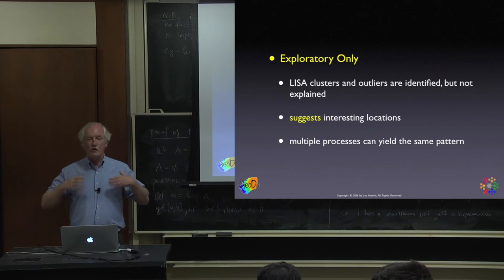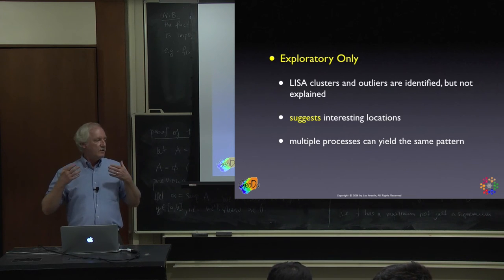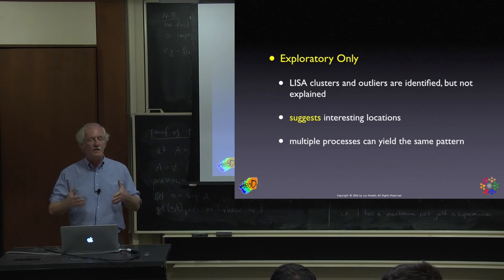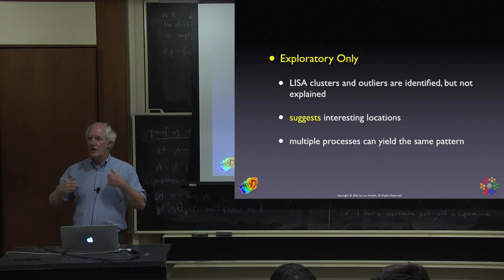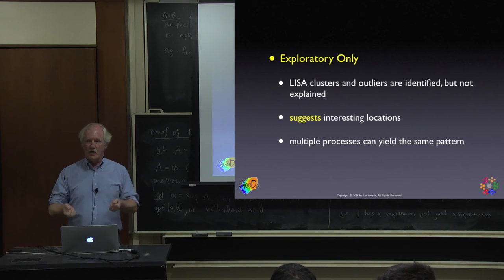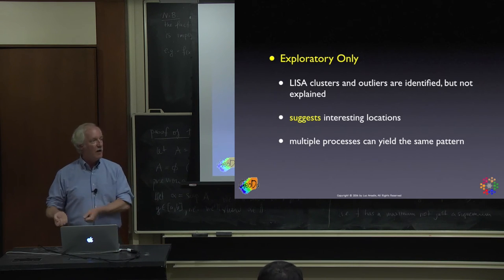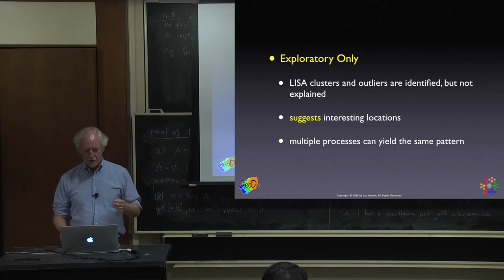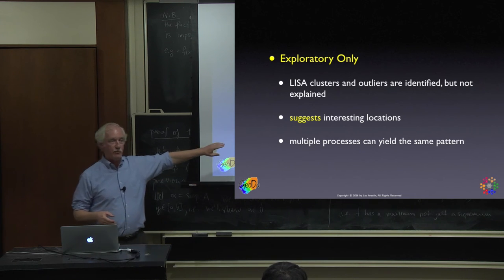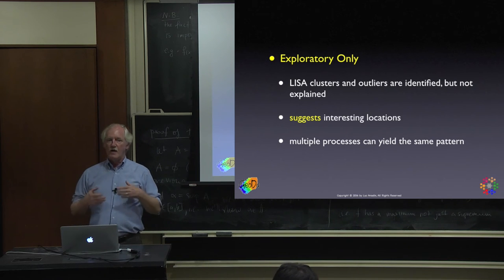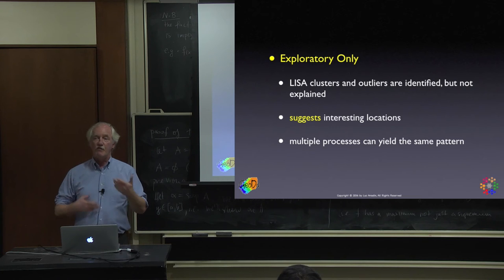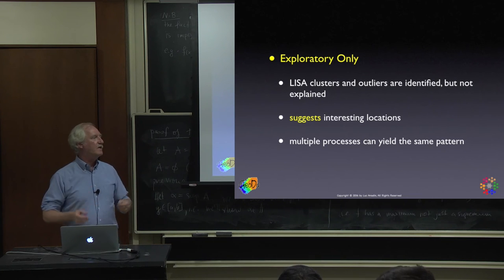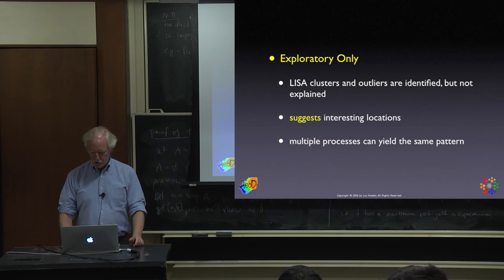The second issue: keep in mind this is exploratory — it doesn't explain anything. Sometimes people do a whole bunch of local cluster maps, but what do you do then? It's a means, not an end. Like any exploratory data analysis, it suggests patterns, potentially explicable patterns — something you might want to include in a model. The model is what explains, not these local cluster maps.